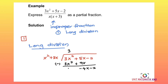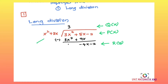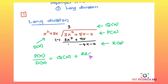After doing the long division, we write it into a general form. We know this is P(x) and this is Q(x). The general equation is: P(x) over D(x) equals Q(x) plus R(x) over D(x).